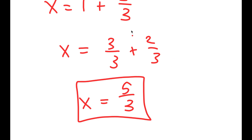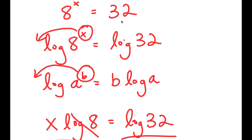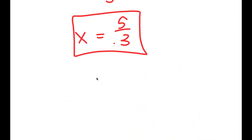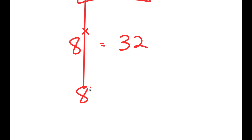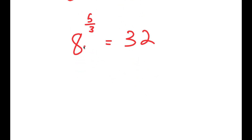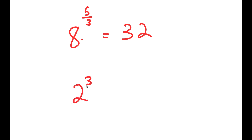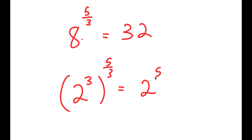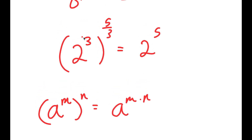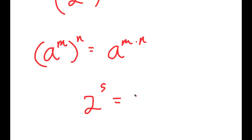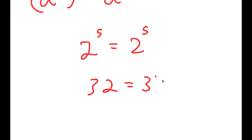How do we know this is the right answer? Going back, we have 8 to the power of x equals 32, and we're plugging in 5 over 3, so we get 8 to the power of 5 over 3 is equal to 32. Since 8 is the same as 2 to the power of 3, we get 2 to the power of 3, to the power of 5 over 3, equal to 2 to the power of 5. Using the rule a to the m to the n equals a to the mn, the 3s cancel out, giving 2 to the power of 5 equals 2 to the power of 5, or 32 equals 32. This is correct.